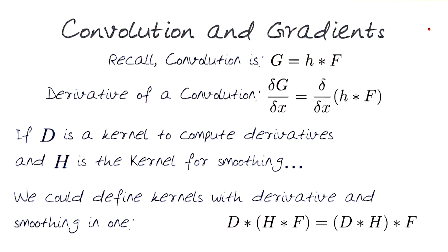If D and H are known, we could now define the derivative and smoothing operation as one formulation: D convolved with H convolved with F.